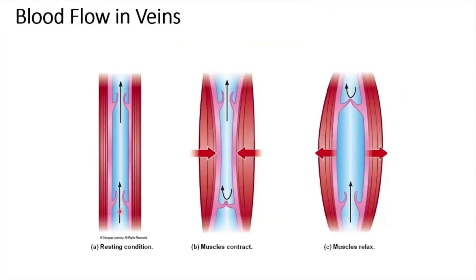Veins carry blood to the heart and have thin walls and large diameter. Since blood pressure in veins is relatively low and blood flow velocity is much slower than in the aorta, there are a few factors that enhance blood flow in veins.